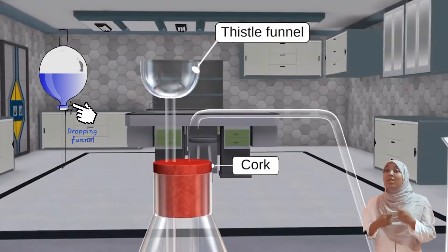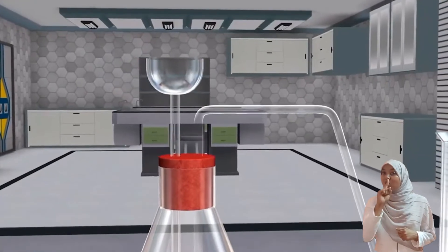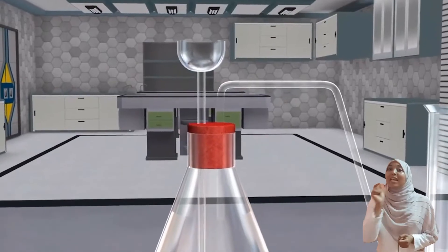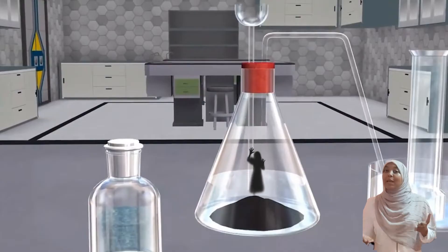You can use a thistle funnel or a dropping funnel. A dropping funnel is better because it has a tap to regulate the liquid flow. If using a thistle funnel, the end should be immersed in the liquid to prevent escape of the gas produced, which in this case is oxygen.